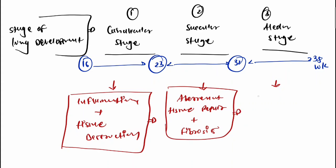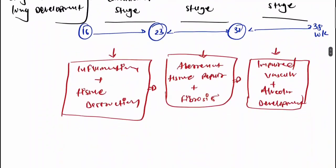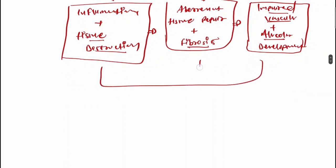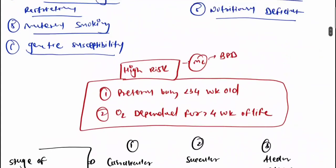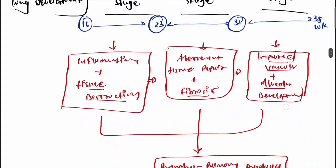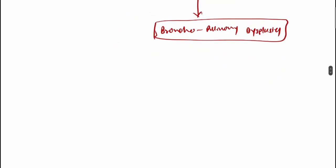Following this, there is impairment of vascular and alveolar development. So, any of these risk factors — primarily the high-risk factors — cause inflammation and tissue destruction. Secondary to this destruction, fibrosis forms, which leads to impaired vascular and alveolar development, resulting in bronchopulmonary dysplasia.